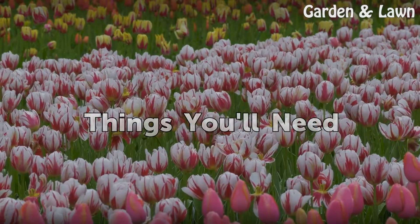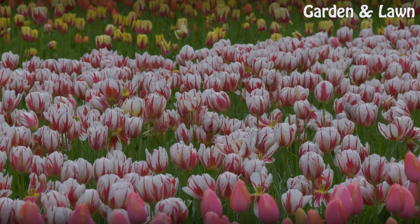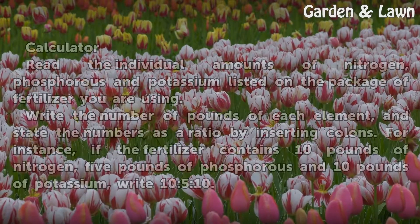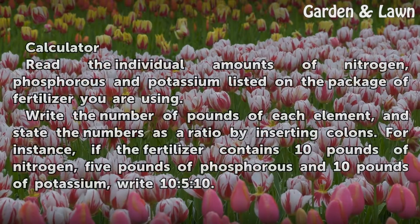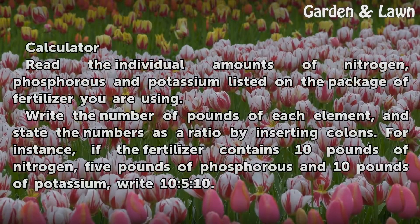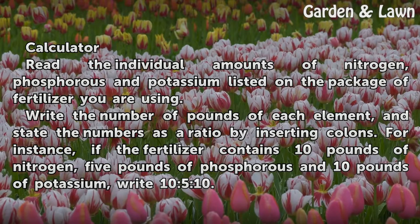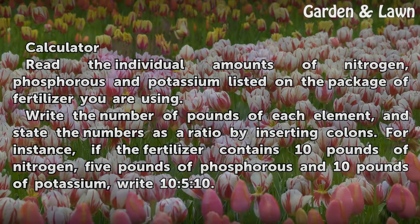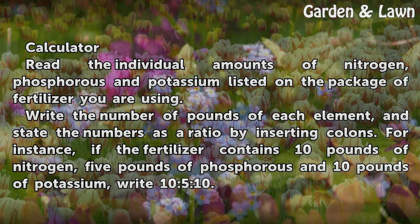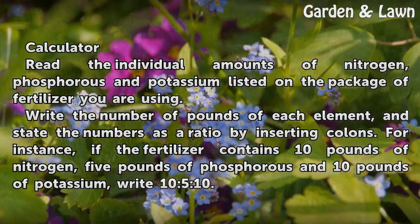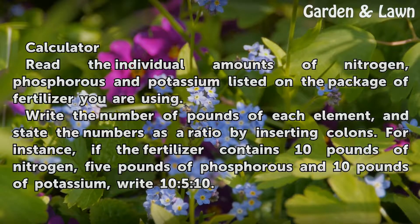Things You Will Need: Calculator. Read the individual amounts of nitrogen, phosphorus and potassium listed on the package of fertilizer you are using. Write the number of pounds of each element and state the numbers as a ratio by inserting colons.